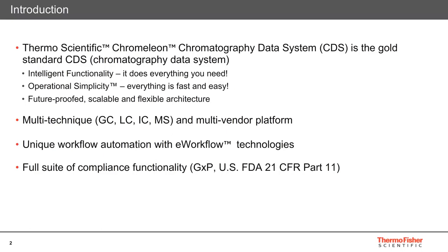Intelligent functionality means that the software contains smart features to enable you to perform all the tasks you need to do, while operational simplicity is a core design principle, bringing the highest levels of ease of use by applying three simple rules to every feature that is added. These rules are: minimize the number of steps needed to perform any task; make all these steps easy to understand and easy to use; and minimize the time needed to perform any task. By using these rules, we can ensure that everything in the software is fast and intuitive.